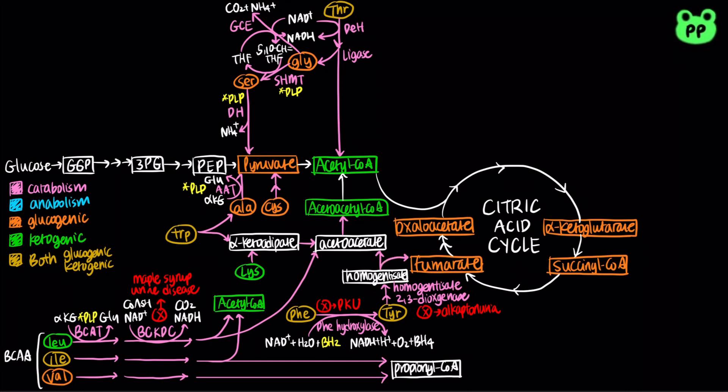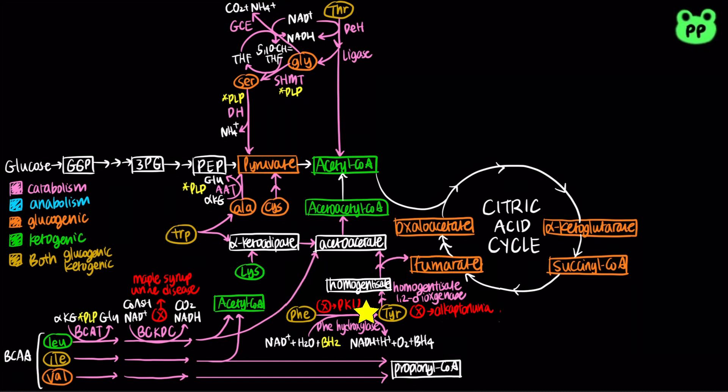This is also the enzyme that led to Archibald Garrod's hypothesis of inborn errors of metabolism, linking an inheritable trait and an enzyme — an important milestone in molecular biology. Ultimately, phenylalanine and tyrosine degrade to fumarate and acetoacetate, which is converted to acetoacetyl-CoA. From these reactions, we see that leucine, lysine, tryptophan, phenylalanine, and tyrosine can all be degraded to acetoacetyl-CoA.